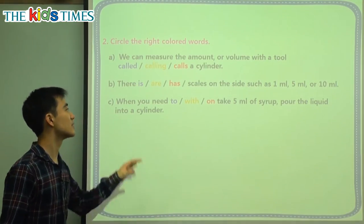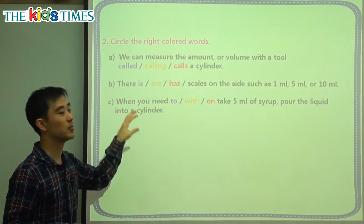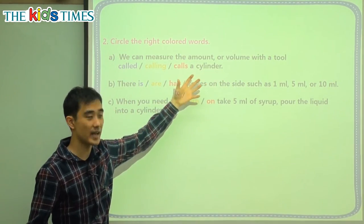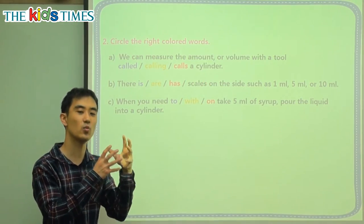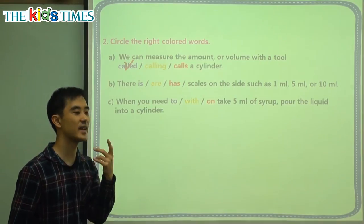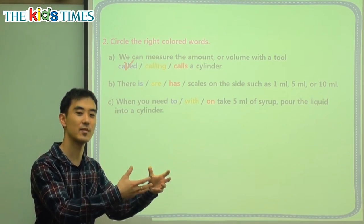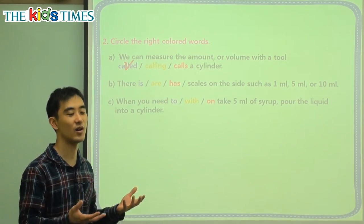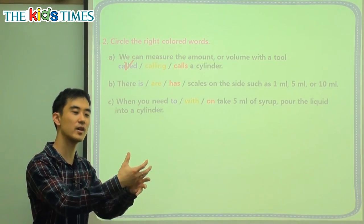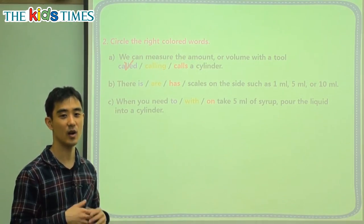Now let's study some grammar. Question A: We can measure the amount or volume with a tool blank a cylinder. The name of this tool is a cylinder. When we say someone's name or what we call them, we say it is called. For example: I have a toy called Turning Mech Card. I have a pencil called Lamy. I have a dog called Odie — that's my dog's name.